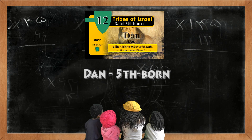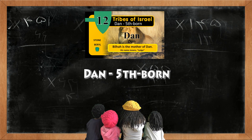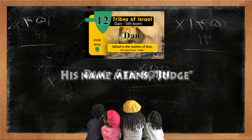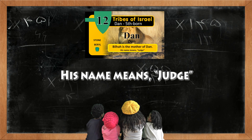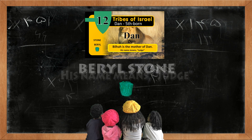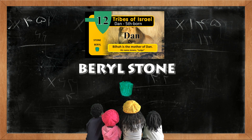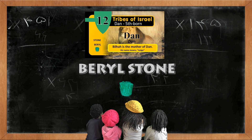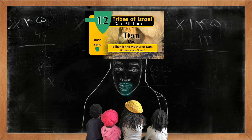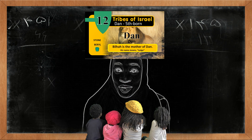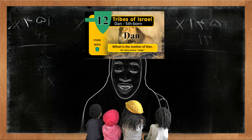Dan is the fifthborn son. His name means Judge. The Burl stone represents the tribe of Dan. Bilhah is the mother of Dan.